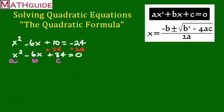All right, so what number do we have for A? We have a 1. If you don't see a number, there is a 1. So, there's a 1 for A, a negative 6 for B, and a 34 for C. All right, so now we've identified what those values are.